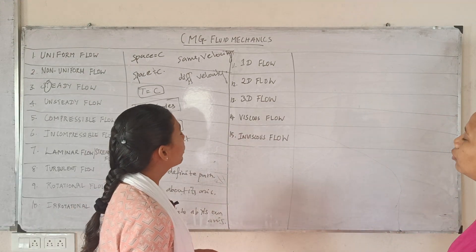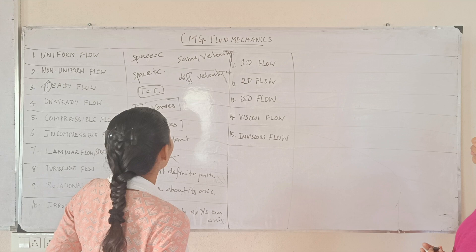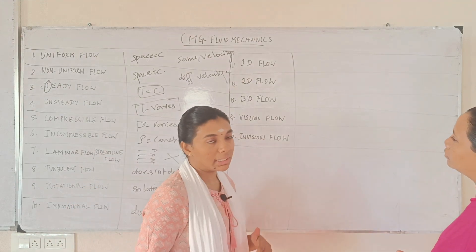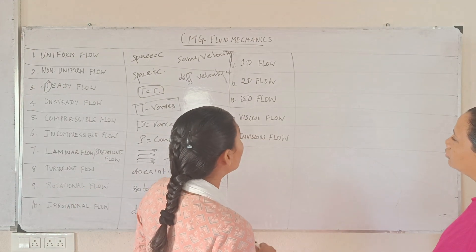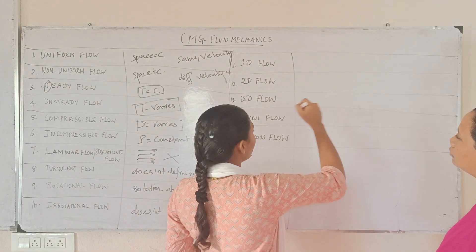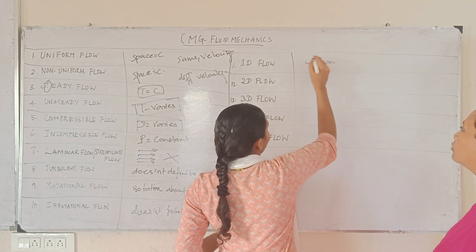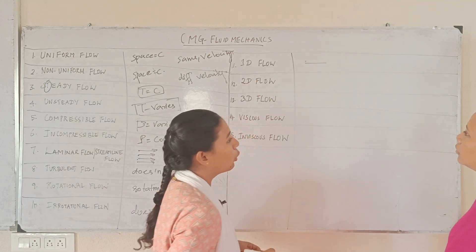One dimensional flow — the fluid particles move in a straight line, which represents one dimensional flow.